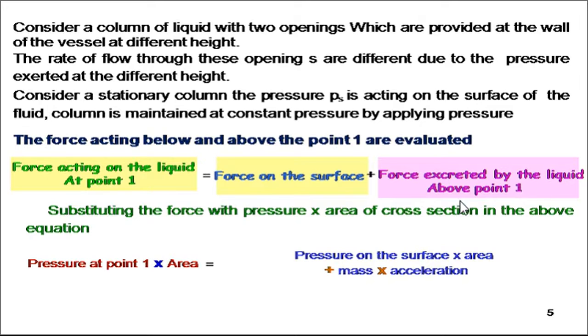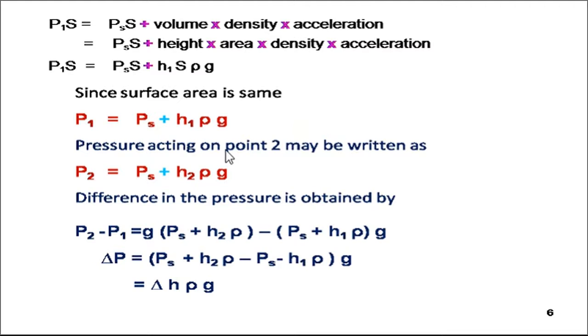The force acting on liquid at point one equals the force on the surface plus force exerted by liquid above point one. Substituting into equation form: p1s = ps × s + mass × acceleration, or p1s = ps + volume × density × acceleration. Since volume is height multiply area, we get p1s = ps + h1ρg, where h1 is height, s is area, ρ is density, and g is acceleration. Since surface area is the same, p1 = ps + h1ρg.